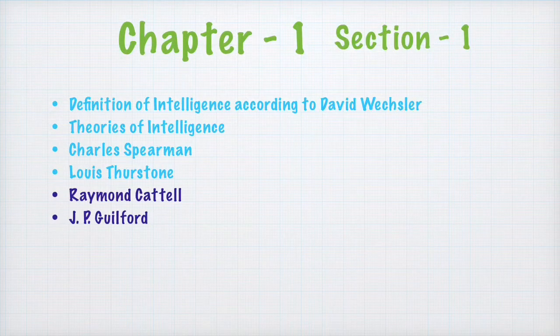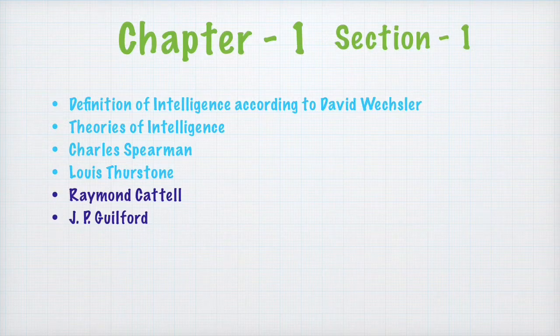We are working on Chapter 1: Variations in Psychological Attributes. In our last lecture, we understood the definition of intelligence by David Wechsler and theories of intelligence by Charles Spearman and L.L. Thurston. Today we are going to take up theories by Raymond Cattell and J.P. Guilford.